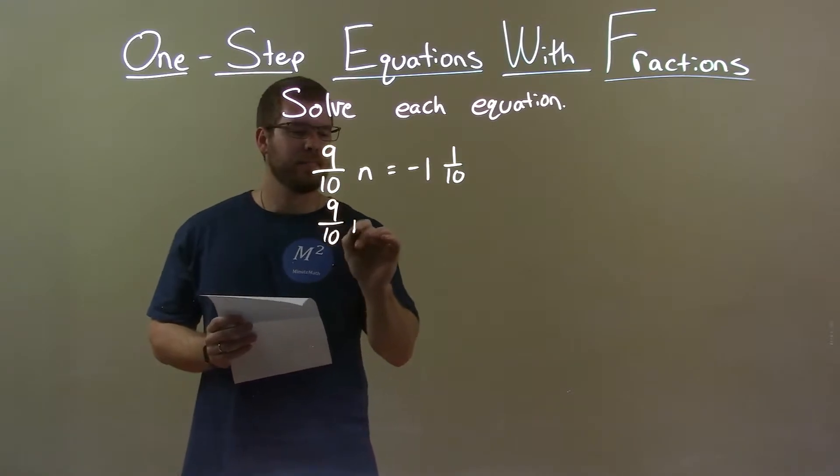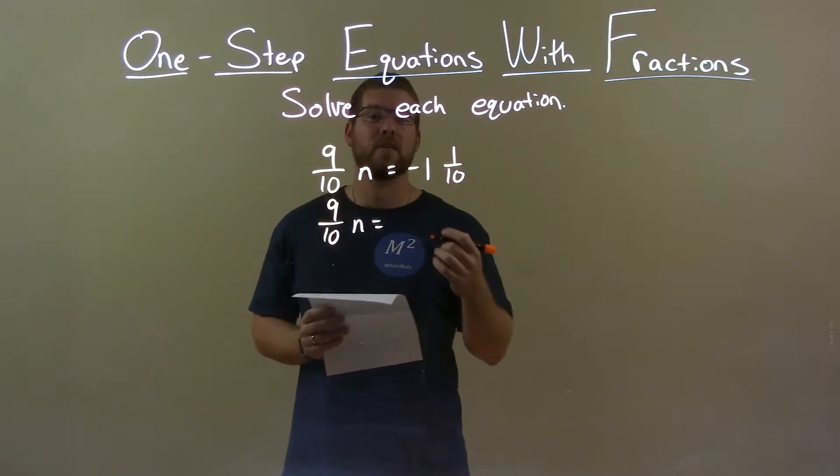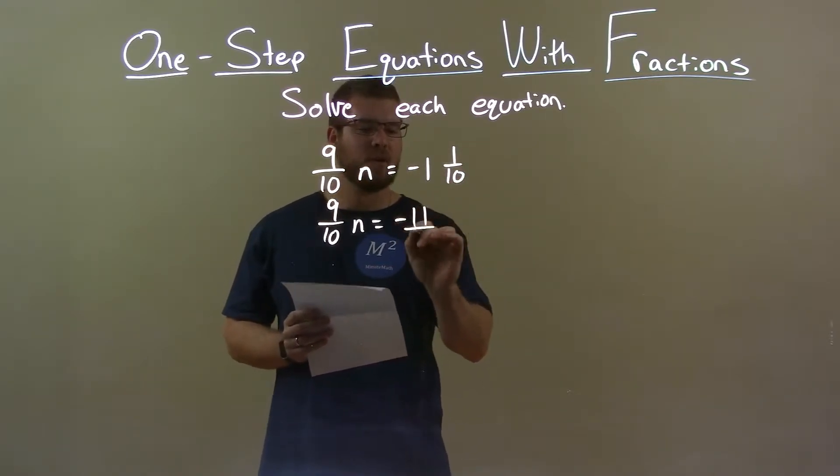So 9 over 10n equals, we can write this as an improper fraction 10 times 1 is 10 plus 1 is 11. So we have a negative 11 over 10 here.